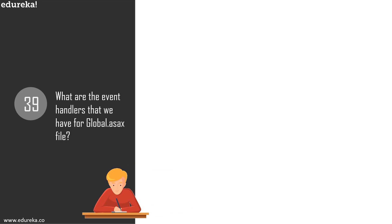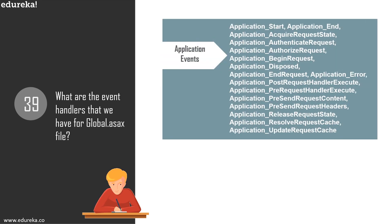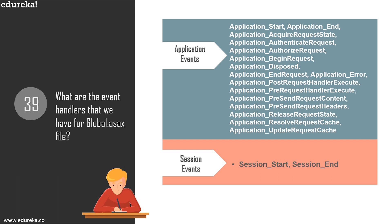Question 39: what are the event handlers for the Global.asax file? There are application events and session events. For session events: Session_Start and Session_End. For application events there are many more: Application_Start, Application_End, Application_AcquireRequestState, AuthenticateRequest, AuthorizeRequest, BeginRequest, Disposed, EndRequest, Error, PostRequestHandlerExecute, PreRequestHandlerExecute, PreSendRequestContent, PreSendRequestHeaders, ReleaseRequestState, ResolveRequestCache, and UpdateRequestCache.